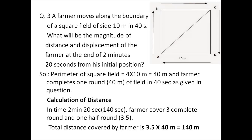In the question we have a square whose side is 10 meters. First we can calculate the perimeter of the square field by applying the formula 4 × side, so we have 4 × 10 = 40 meters. The perimeter of the square field is 40 meters, and it is given that the farmer completes one round in 40 seconds.